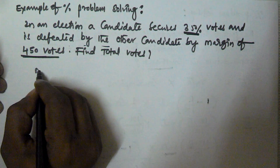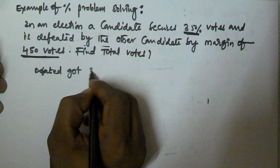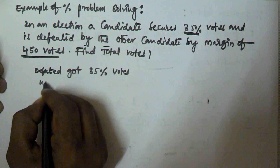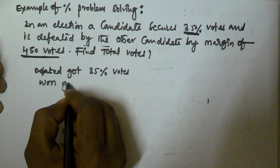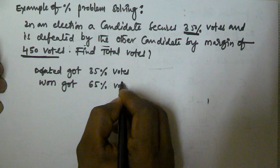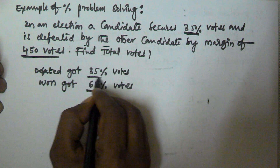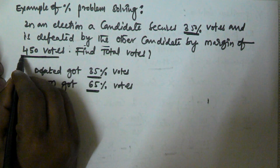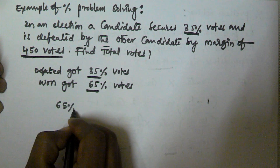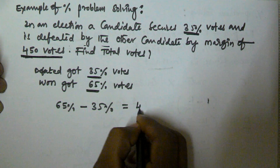The person who was defeated got 35 percentage votes, that means the person who won got 65 percentage votes. The person who got 65% defeated the person who got 35% by a margin of 450 votes. That means 65 percentage minus 35 percentage is equal to 450 votes.